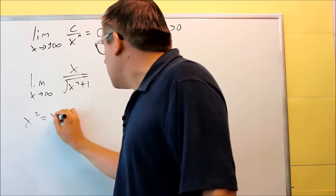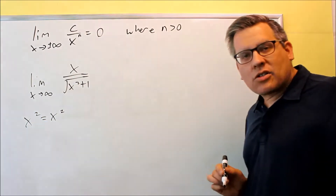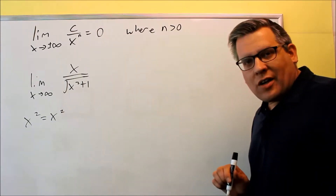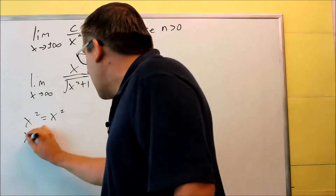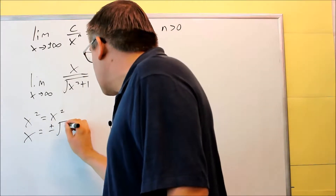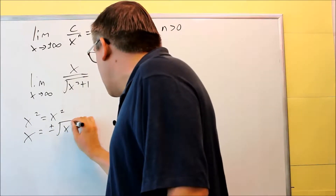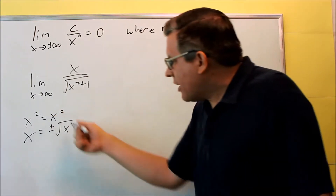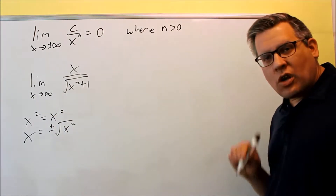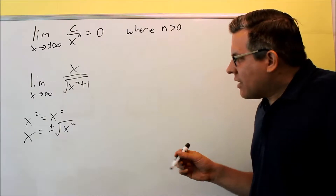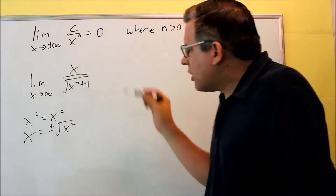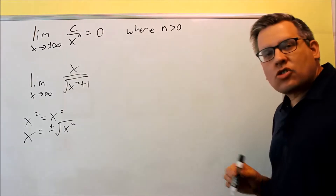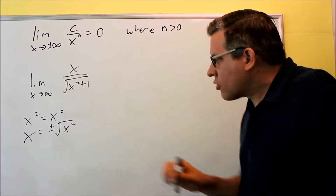Let's first start with an identity. I'm going to start with x squared equals x squared. Suppose I square root both sides — that means I would get x is equal to plus or minus the square root of x squared. So because I'm applying that, both of these would actually work. The highest power in the bottom is either going to be positive square root of x squared or negative square root of x squared.